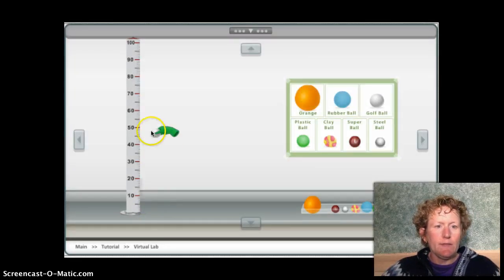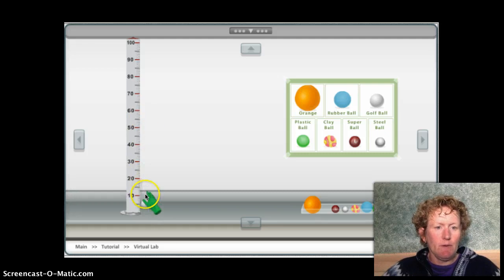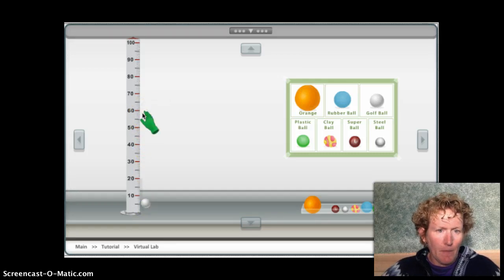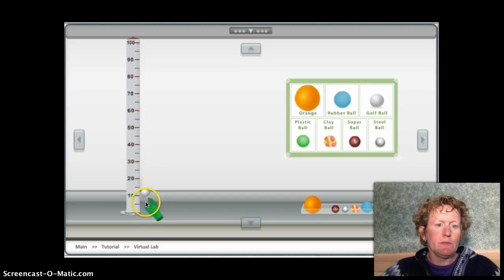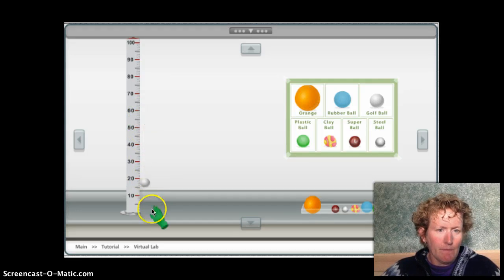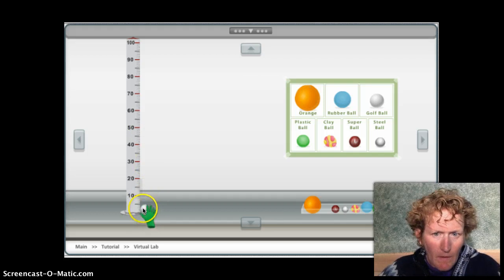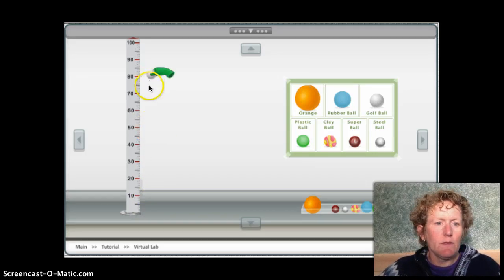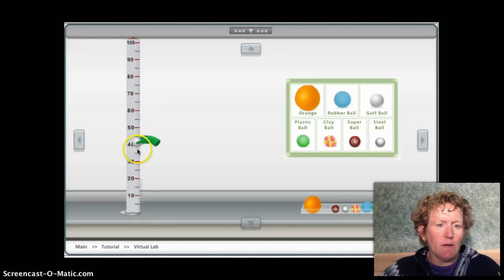We're back in the lab and we need to do a 60 centimeter drop height. Let's give that a shot. Remember we're looking at where the bottom of the ball is when it bounces. I'm thinking it's right around 30 something, so keep your eye on 30 something. It almost looked like about 39 to me. So for a drop height of 60 centimeters, the bounce height was right around 39.